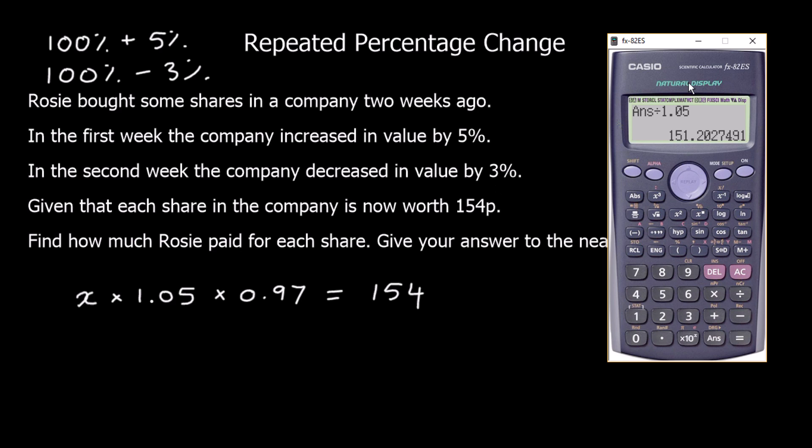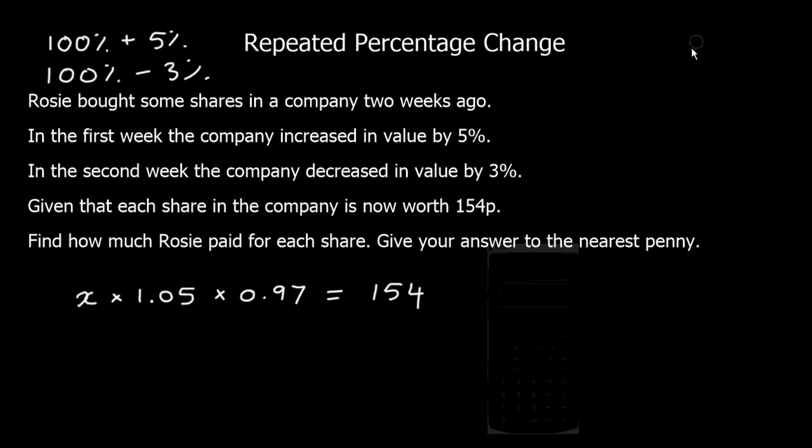So this should be my value of X now as 151.2. So to the nearest penny, that is 151. So X equals 154 divided by 0.97 divided by 1.05, which was 151p to the nearest penny.